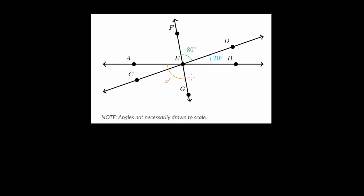With this problem there's a lot going on, but we're told that angle FED is 80 degrees, angle DEB is 20 degrees, and we need to find angle x, which is composed of angle AEC and angle CEG. To find x, it looks like we want to use the ideas of vertical angles.